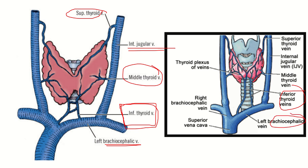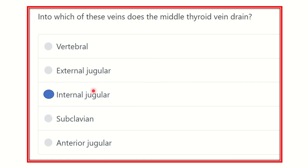This is a direct question and one of the easy questions. There is no doubt that the middle thyroid vein drains into the internal jugular vein. So our final answer is the internal jugular vein. Thank you all.